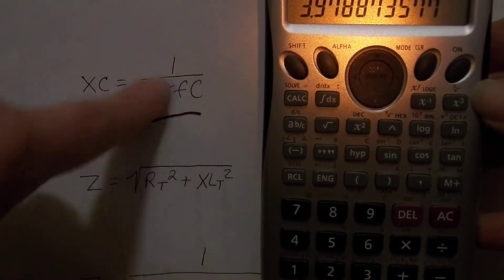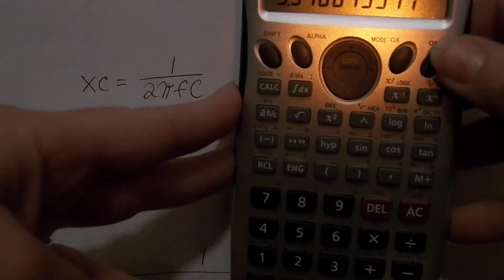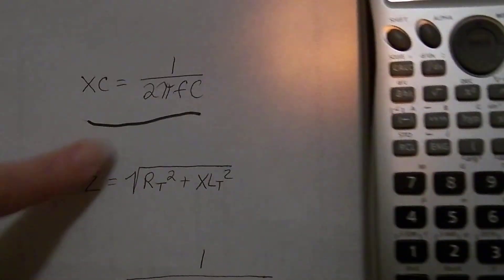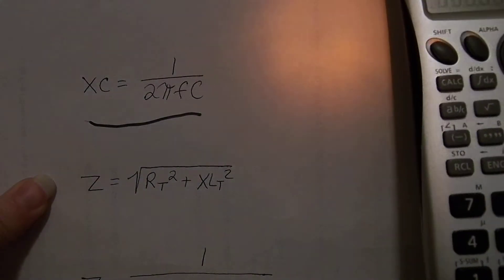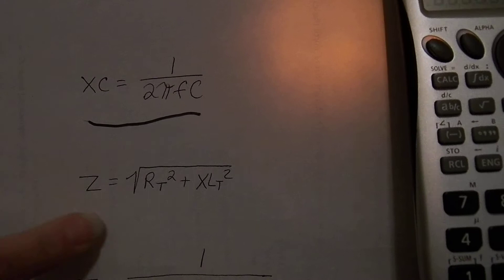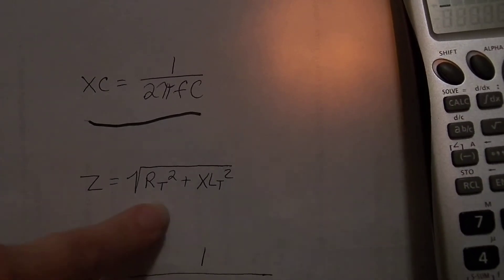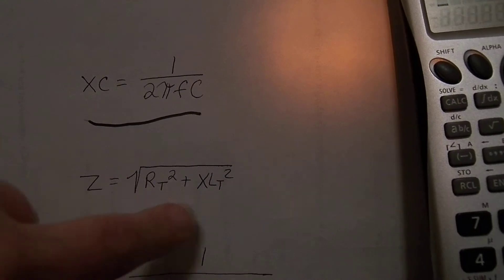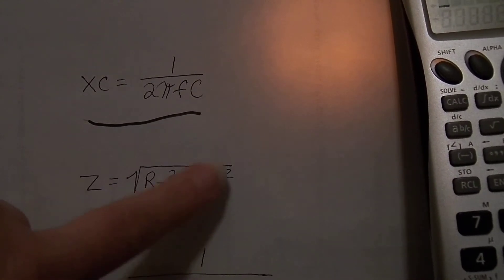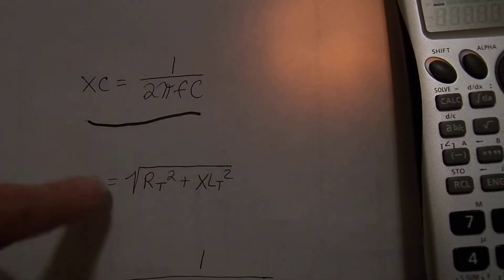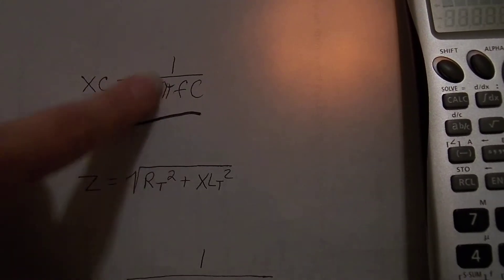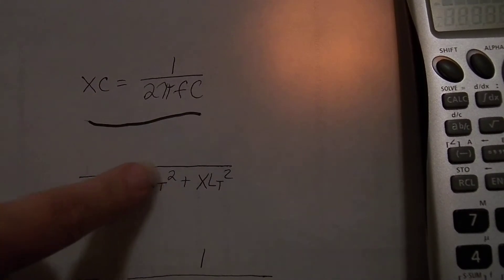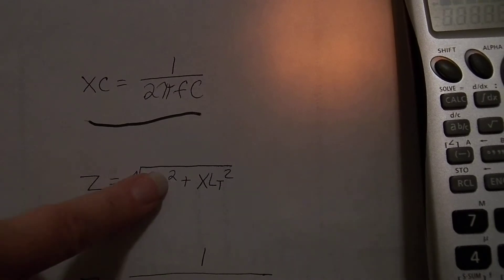Now when you are doing your impedance down here, so this is series impedance right below here. Z is equal to the square root of resistance—the total resistance squared plus the total inductive reactance squared. What you would do first, now again, this is similar to this in your order of operations in that if you were to put a square root...